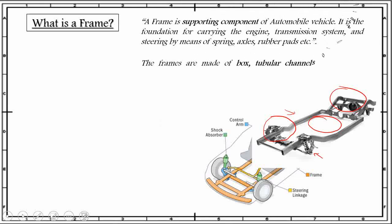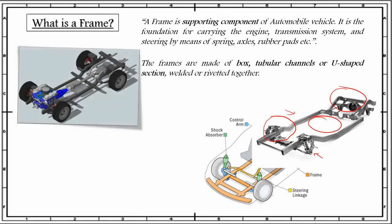The frames are made of box, tubular channels, or I sections welded or riveted together. As you can see, this type of frame is made of box channels, whereas the cross section of this frame is made of tubular channels.